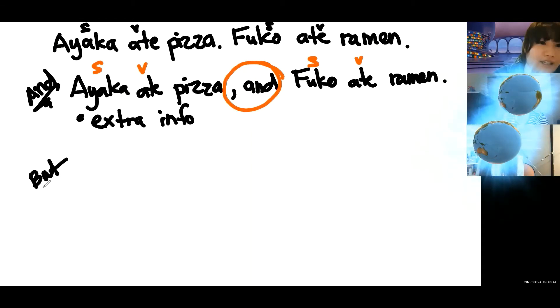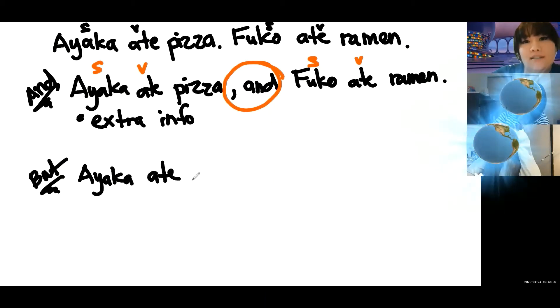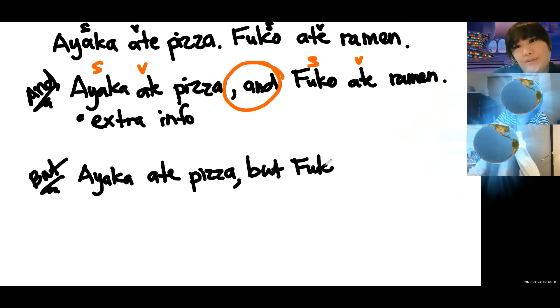That's but, not bat. So Ayaka ate pizza, but Fuko ate ramen.